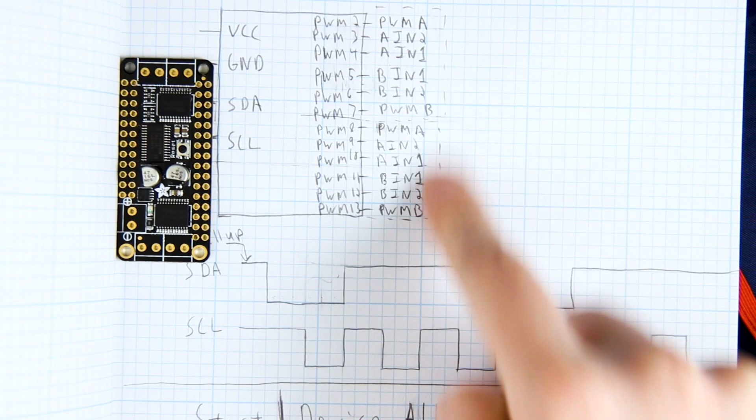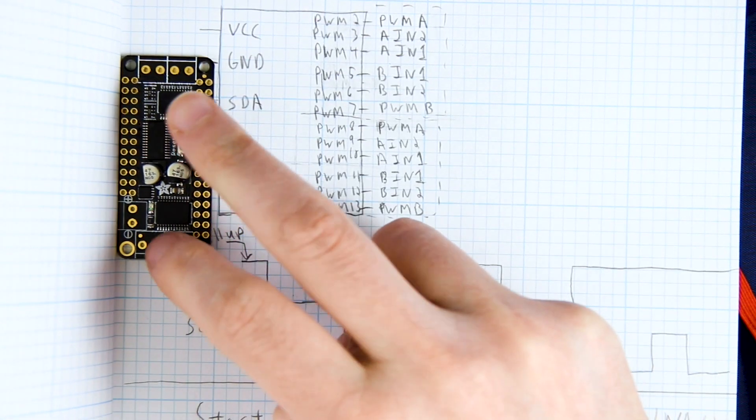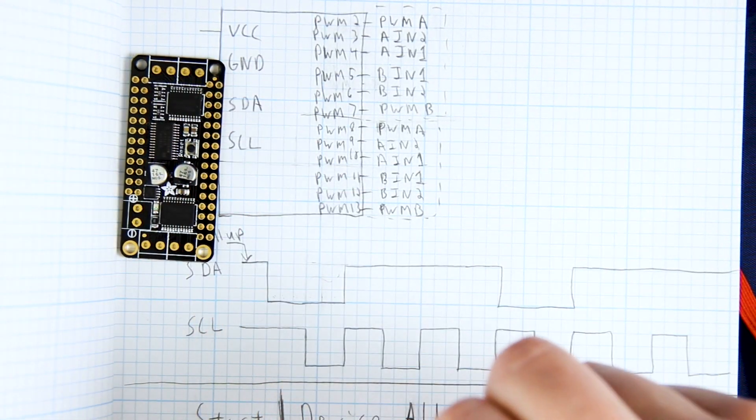So that's how these PWM outputs are controlling these two chips right here and they're really the ones that are driving the motors.